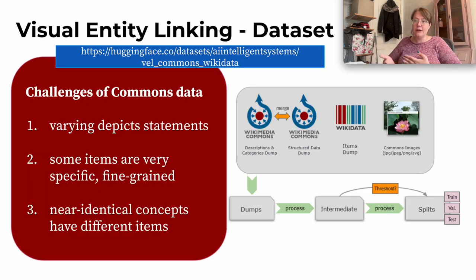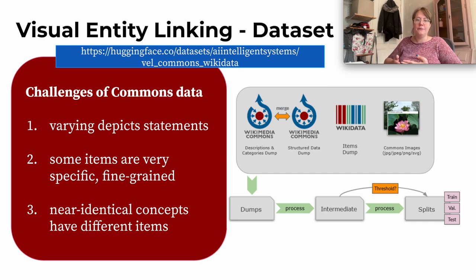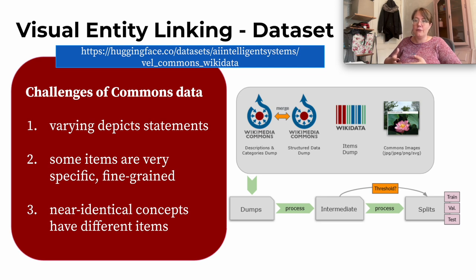Working with real-life data always brings challenges. The challenges with Wikimedia Commons data specifically are: first, there's a varying understanding of what depict statements should entail — different community guidelines on how broad or narrow they should be. This leads to downstream problems in the dataset. For example, some items are very specific and fine-grained, like the exact address of a house in the Netherlands. There is also the problem that near-identical concepts — such as different models of BMWs — have different items on Wikidata, making it very hard for our model to learn what item to link.